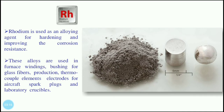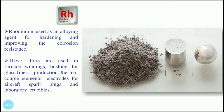Rhodium, in powder form, looks slightly dark but has a good shine. It is used as an alloying agent for hardening and improving corrosion resistance. These alloys are used in furnace windings, bushings for glass fiber production, thermocouple elements, electrodes for aircraft spark plugs, and laboratory crucibles.